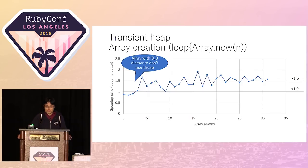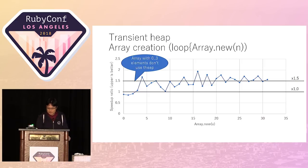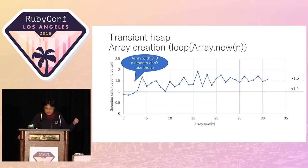This test shows how fast array creation and GC collection is using transient heap, compared with a no-transient-heap version. The x-axis shows the number of array elements and the y-axis shows the speed-up compared with no transient heap. You can see no performance improvement with 0 to 3 elements, because arrays with 0 to 3 elements use another optimized technique and don't use transient heap. But we can see performance improvement for larger element counts — up to 50% faster.